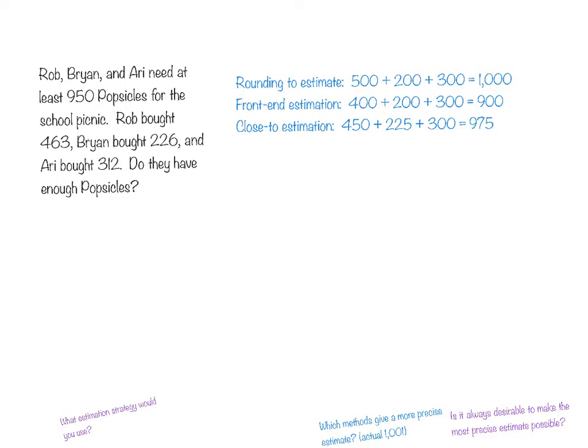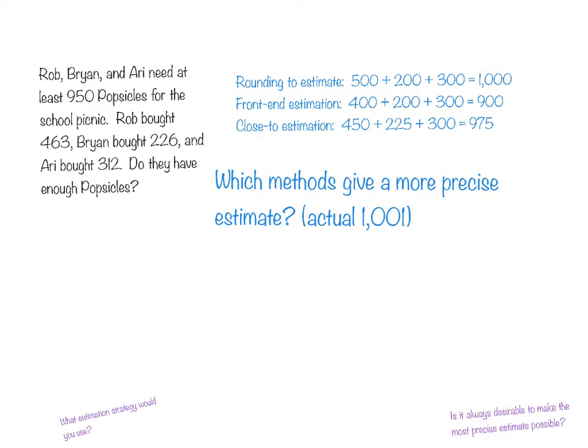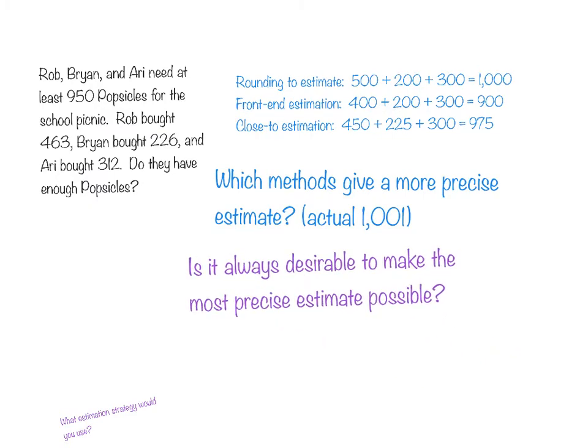You probably can see that they're going to have more than enough popsicles. Which method gives a more precise estimate? When you look at those, which methods give a more precise estimate? Remember, our actual answer is 1,001. We would probably say that rounding and close to estimation gives us the closest answers for this one.